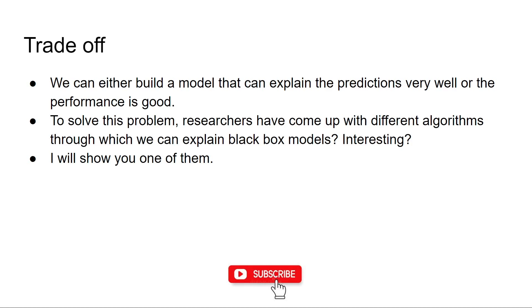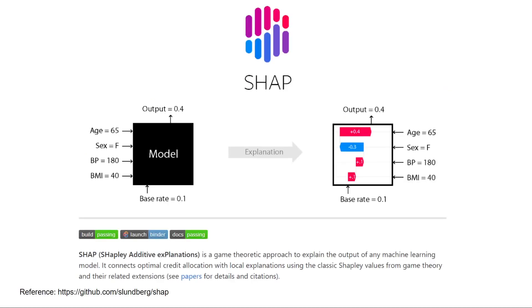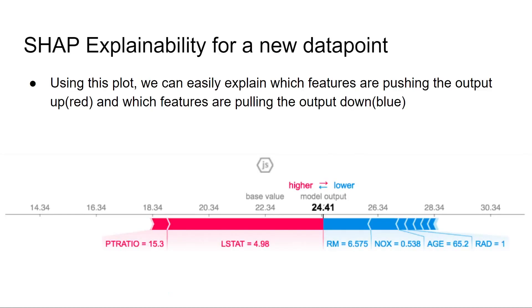I will show you one of them. So one of the algorithms we have is SHAP. Using SHAP, we can easily extract the drivers of complex algorithms like XGBoost, LightGBM, or even neural networks as well. This is how the SHAP explainability for a new data point looks like. For a new data point, we can generate this plot using SHAP.